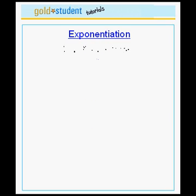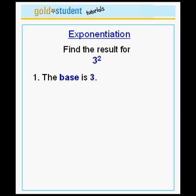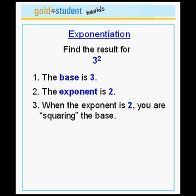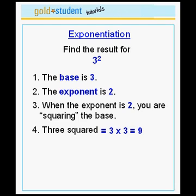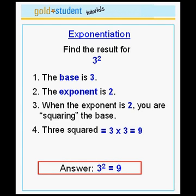Let's do some examples. Let's find the result for 3 to the 2. The base here is the number 3 and the exponent is the number 2. When the exponent is 2, you say that you are squaring the base. Here, we have 3 to the 2, or in other words, 3 squared. This is equal to 3 times 3, which is equal to 9. Therefore, 3 to the power 2, or 3 squared, is equal to 9.